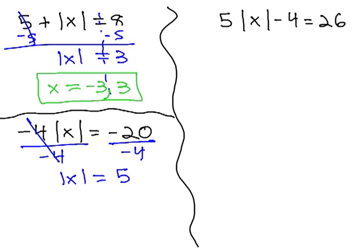Once the absolute value is alone, again, we only have to consider the positive and negative solutions. x could be equal to negative 5, or x could be equal to positive 5. These are our two solutions that would make this equation true.